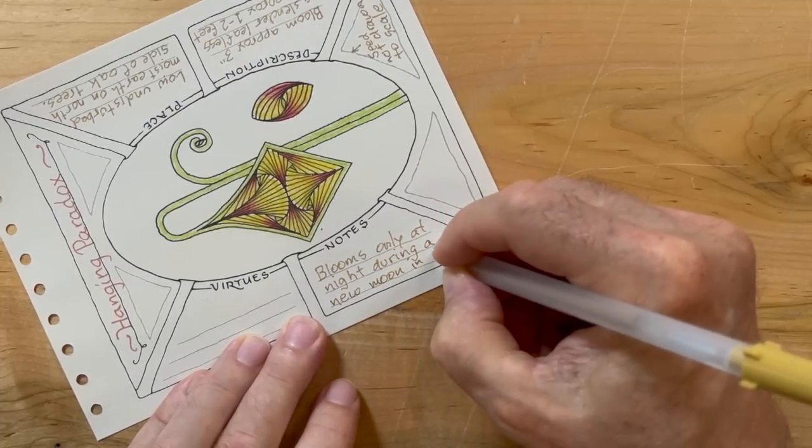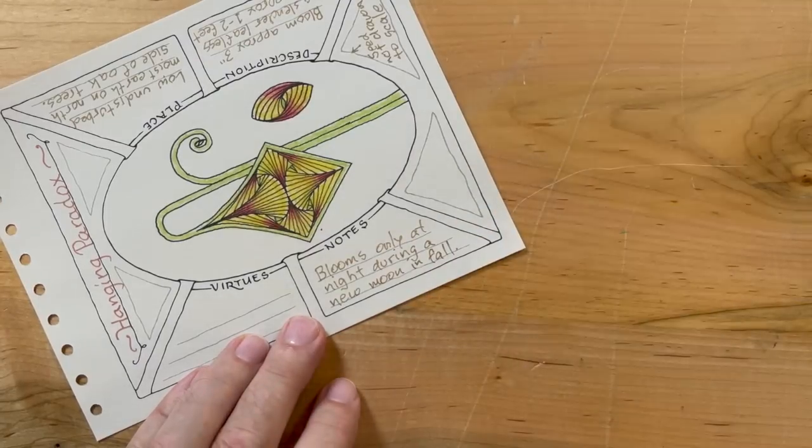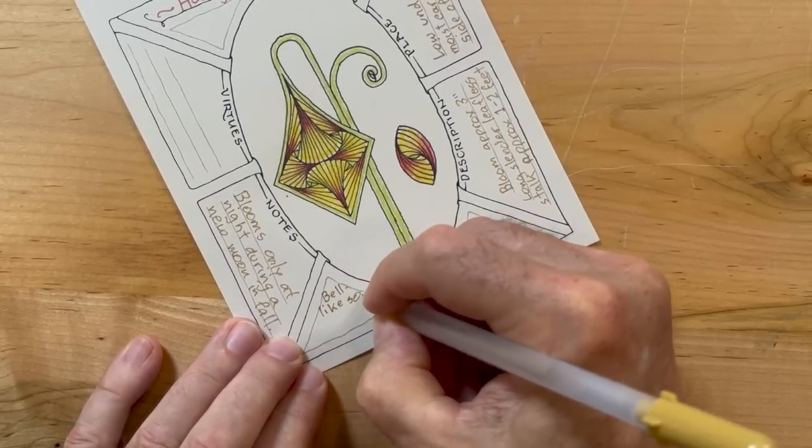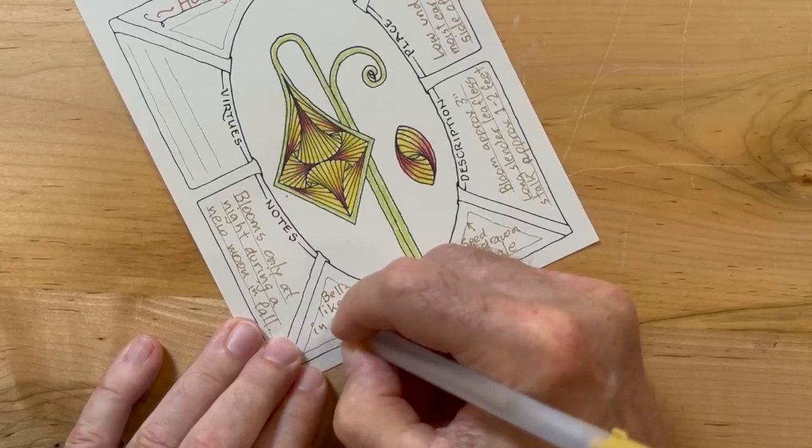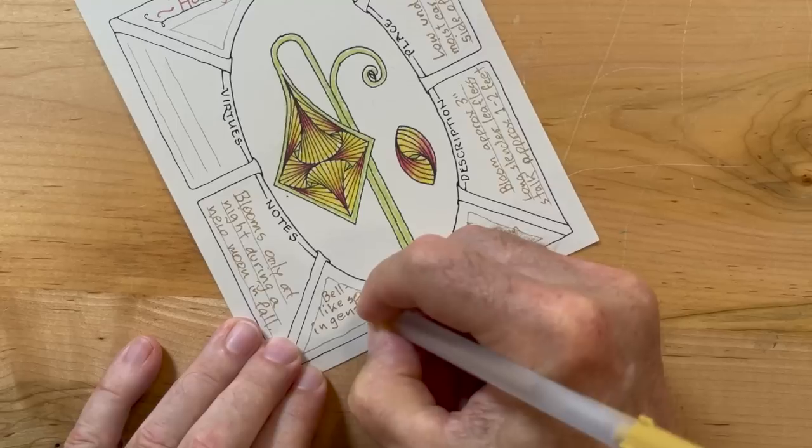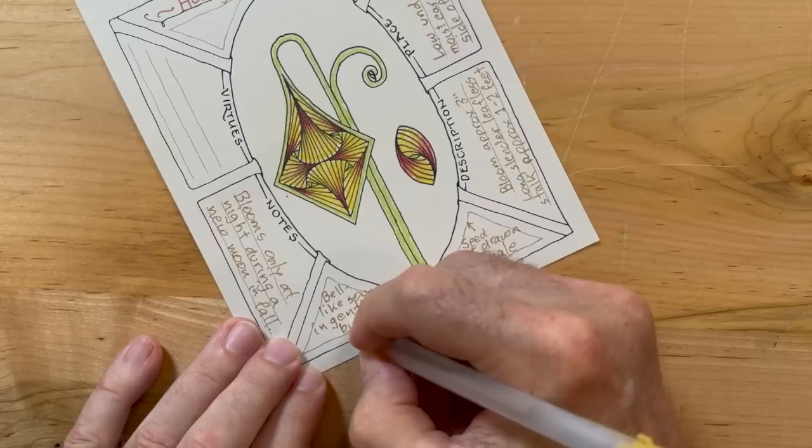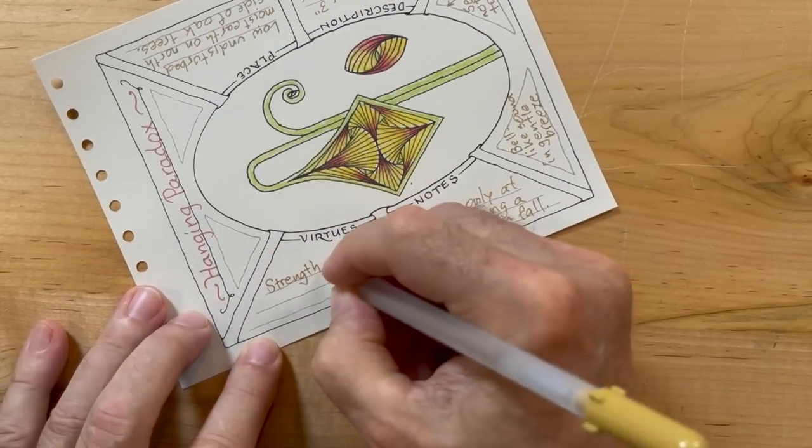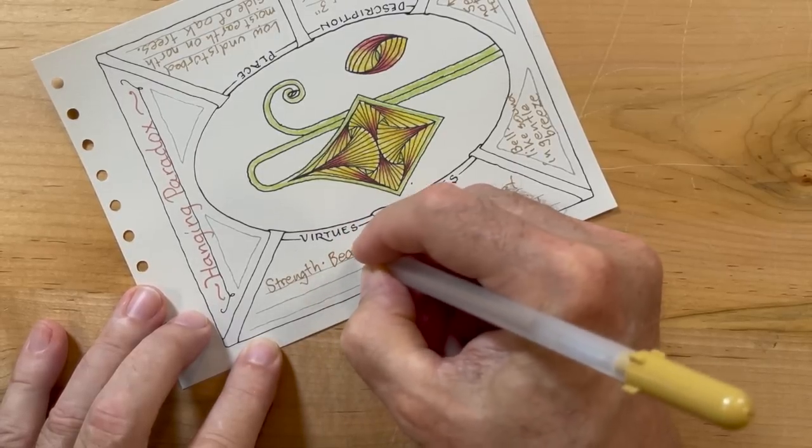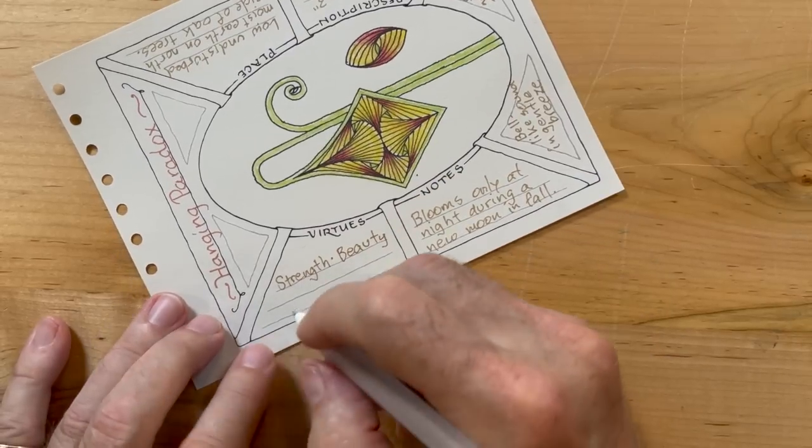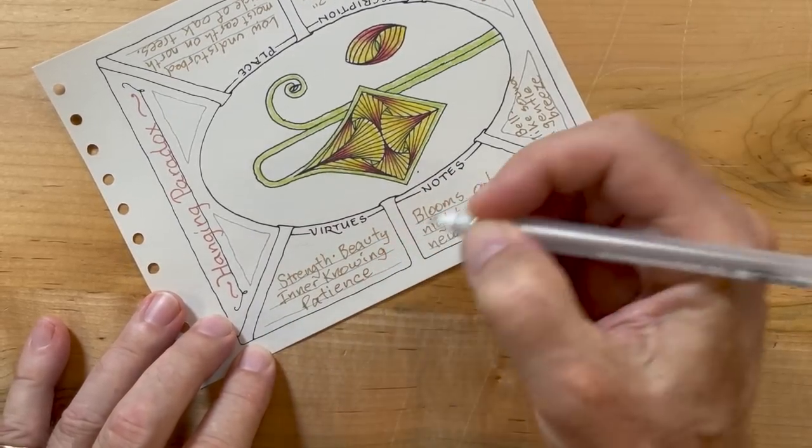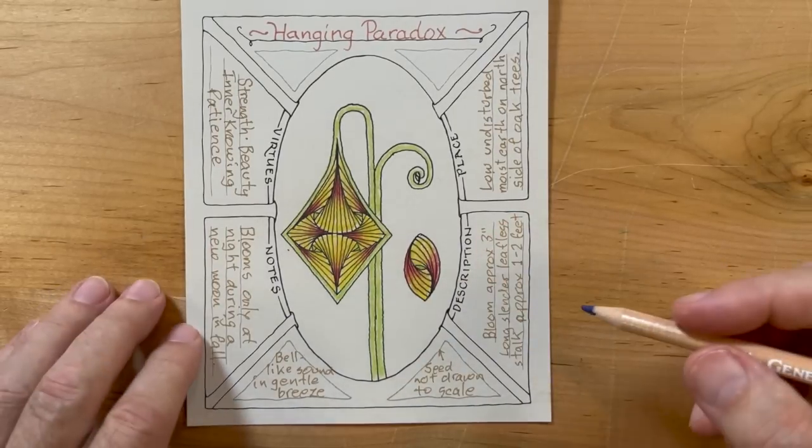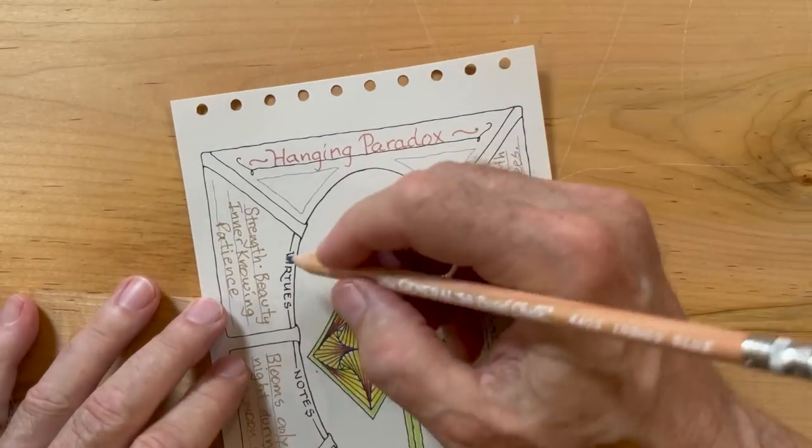I'm making a little note that the seed is obviously not drawn to scale. The reason it's very rare is it blooms only at night during a new moon in the fall. There's like two or three. The most amazing thing is that if there is a gentle breeze, you will start to hear this bell-like sound from the flower, the paradox. Maybe something is ringing within it or vibrating. I think that's why it's on such a large stalk that the slightest bit of air movement makes that sound. And the virtues are strength, beauty, inner knowing, and patience.